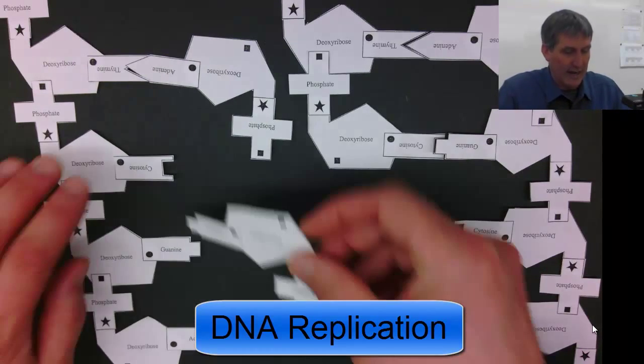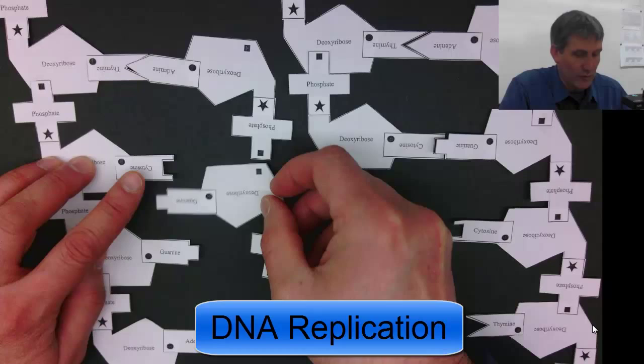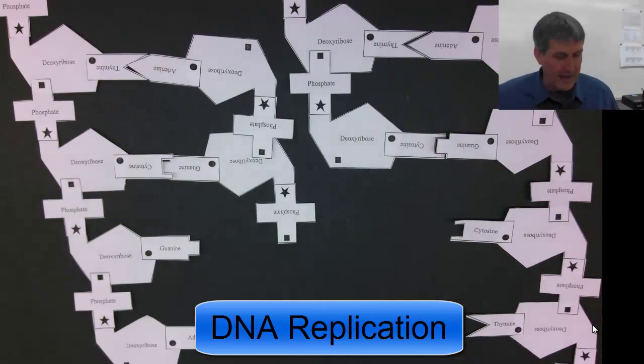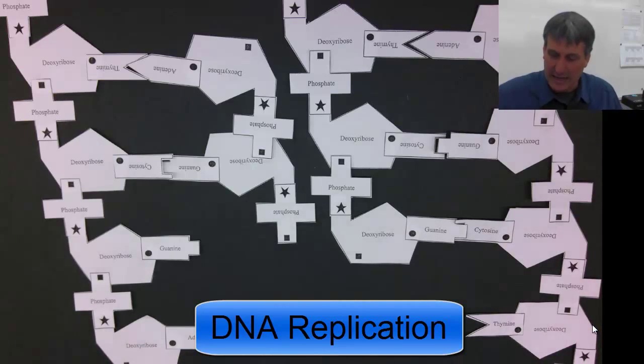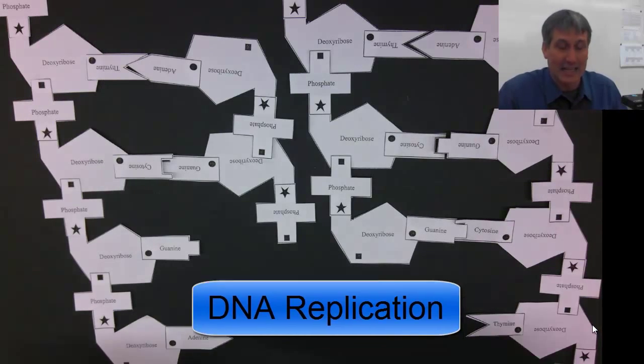The existing strand is used to make a new strand. These strands are genetically identical, they're exact copies of each other.